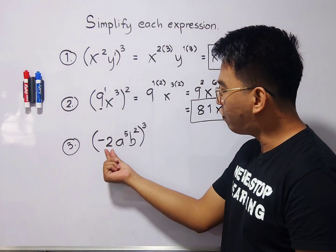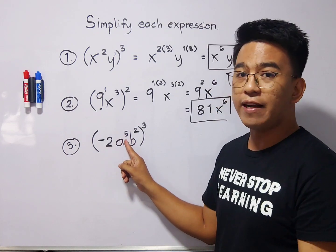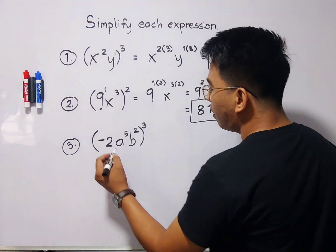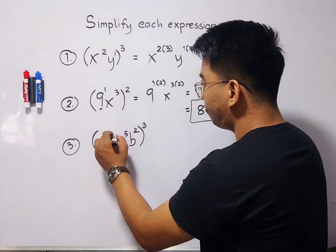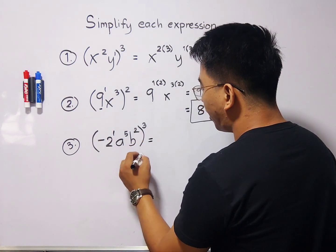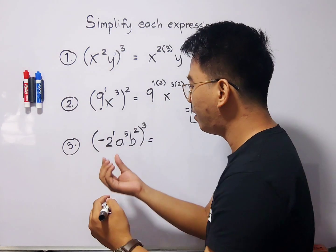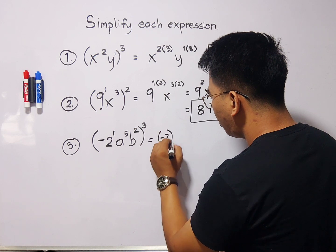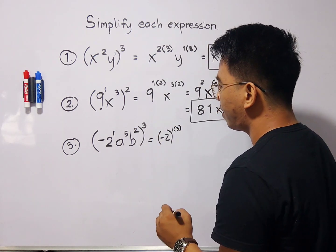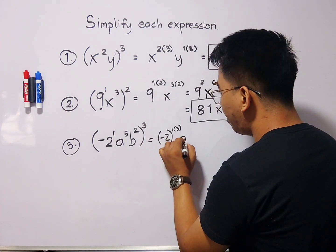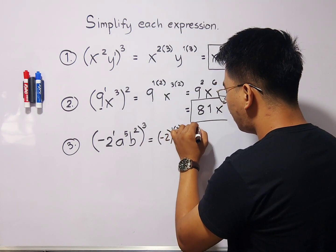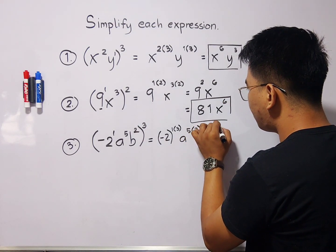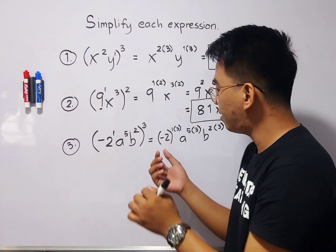For number 3, we have negative 2, a raised to the 5th, b squared, all raised to the third power. Don't worry — negative 2 has an exponent of 1. Doing this step by step: negative 2 raised to 1 times 3, and for variable a that is a raised to 5 times 3, and for variable b we have b raised to 2 times 3.